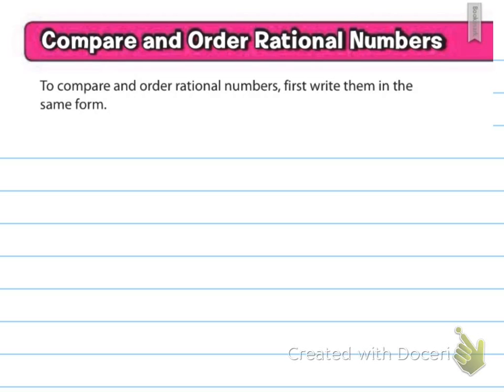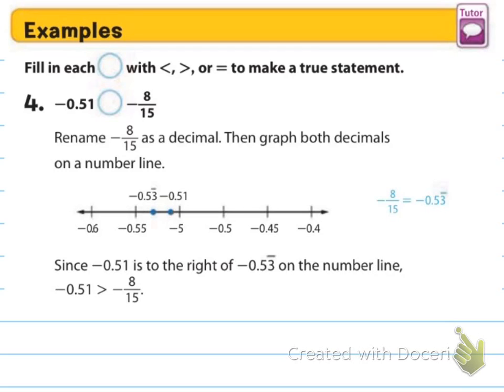So compare and order rational numbers. To compare and order rational numbers, first, write them in the same form. I've got a decimal and a fraction. They're both negatives, so unfortunately I can't just jump into it and say positives are always bigger. They're both negatives, so I actually have to figure out what do they both mean. Going back to top dog in the doghouse, I need to divide. I need to do 8 divided by 15.